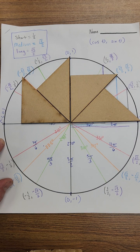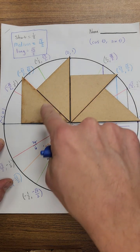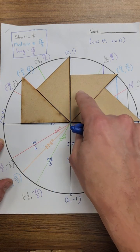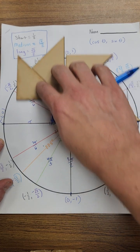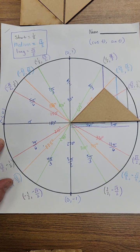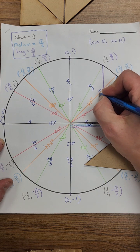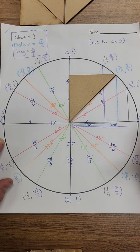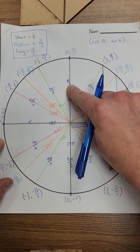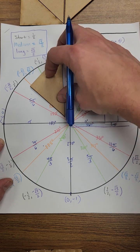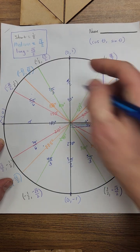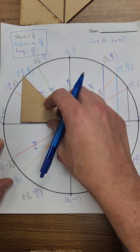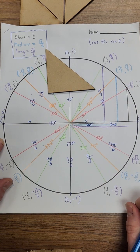Now we're using the 45-45-90 triangles. With those, we can break π up into one, two, three, four equal parts. So each of these parts represents a fourth of π. This one would be one fourth π — that's π/4. Continuing on, two fourths π reduces to one half, so π/2 — we already have that one. This would be our third one: three fourths π, which can't reduce, so that's 3π/4. And then four fourths π brings us back to π.